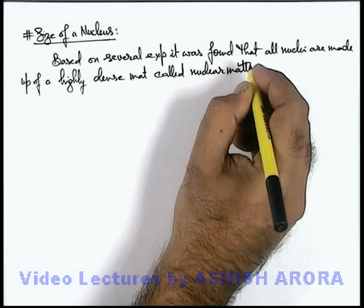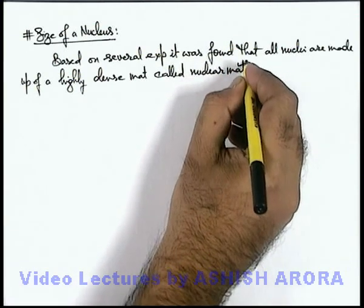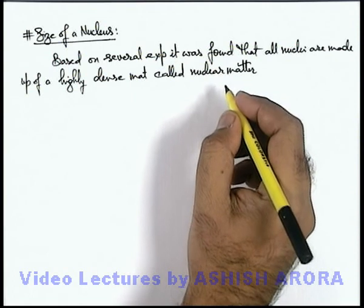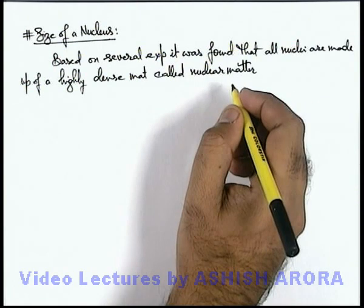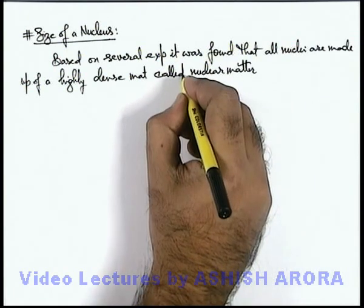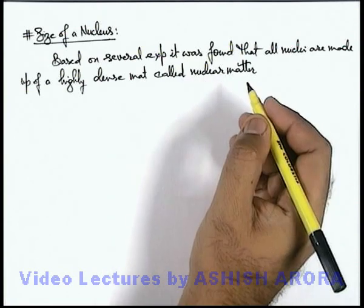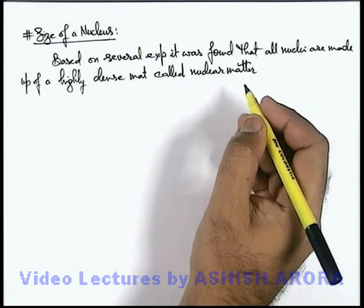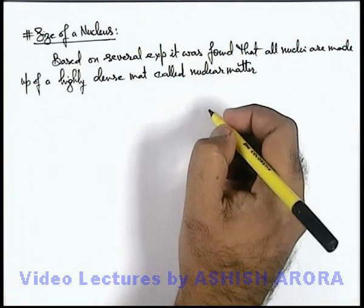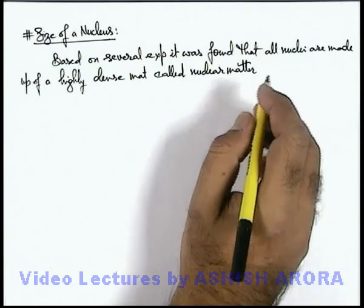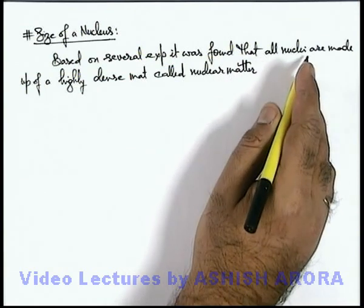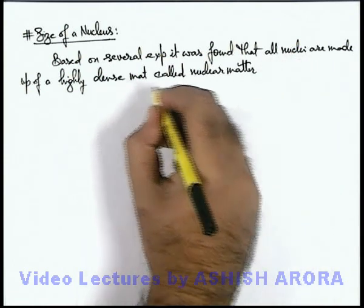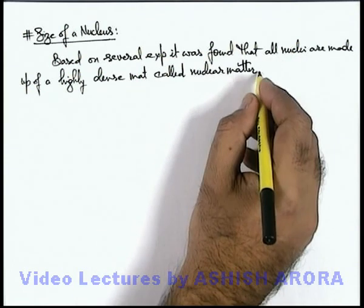As we've discussed, a nucleus is composed of protons and neutrons, and there are some other particles which are also constituents of the nucleus — we'll discuss those later. The important point here is that all nuclei, for all elements, are made up of this highly dense material called nuclear matter.